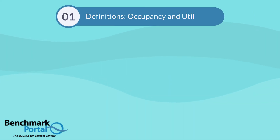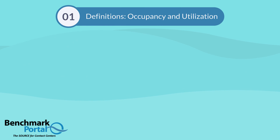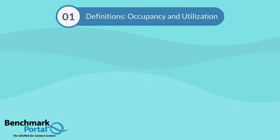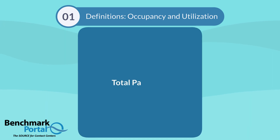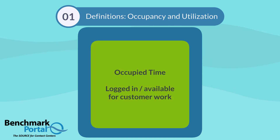Okay, let's dig in. While I like out-of-the-box thinking, I think the best way to explain occupancy and utilization is by using boxes. Let's draw a first box — this represents total paid time. Then let's draw another box inside the total paid time box. This represents occupied time.